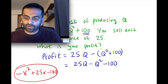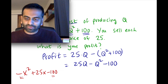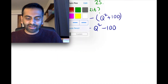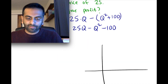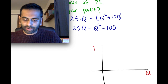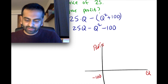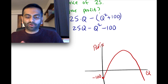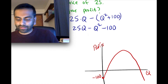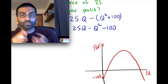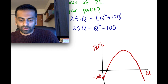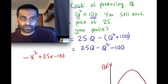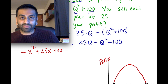If we graph this with the x-axis as quantity and the y-axis as profit, even if we sell zero units our profit will be negative 100 — that's the y-intercept. It's downward-opening, so it looks something like that. Now if you're wondering how many units of ice cream you need to sell to break even, the break-even points — where profits are zero — would be the x-intercepts. You can find those x-intercepts by factoring or by using the quadratic formula.